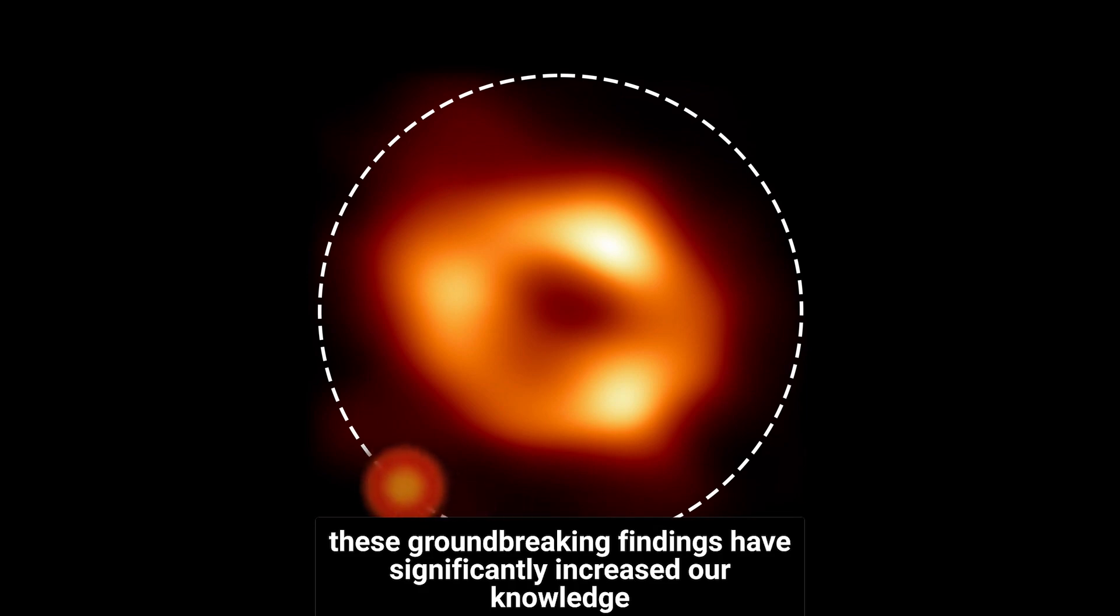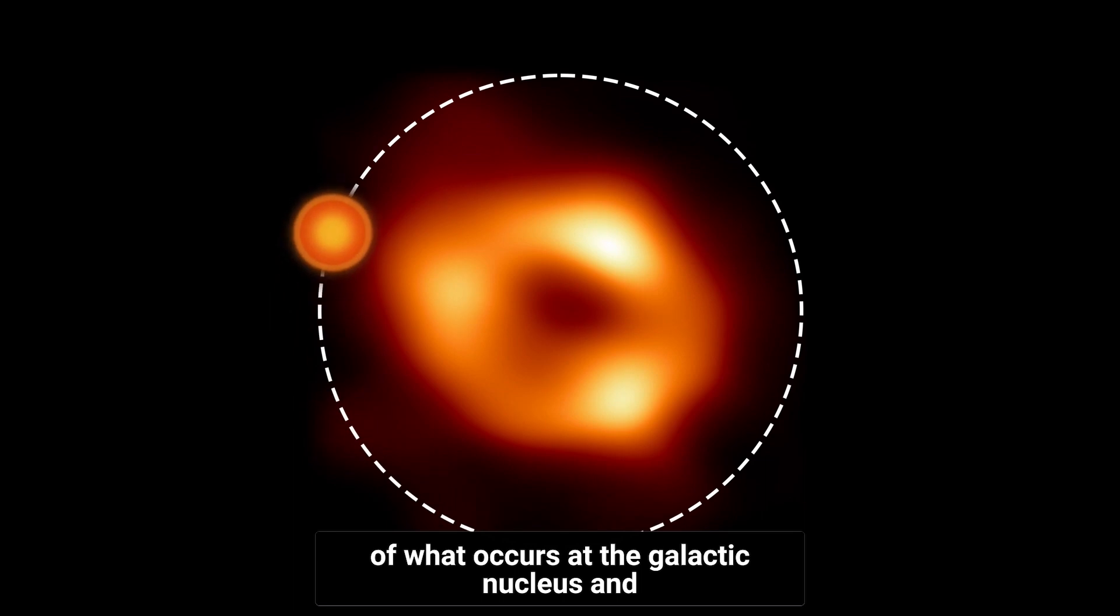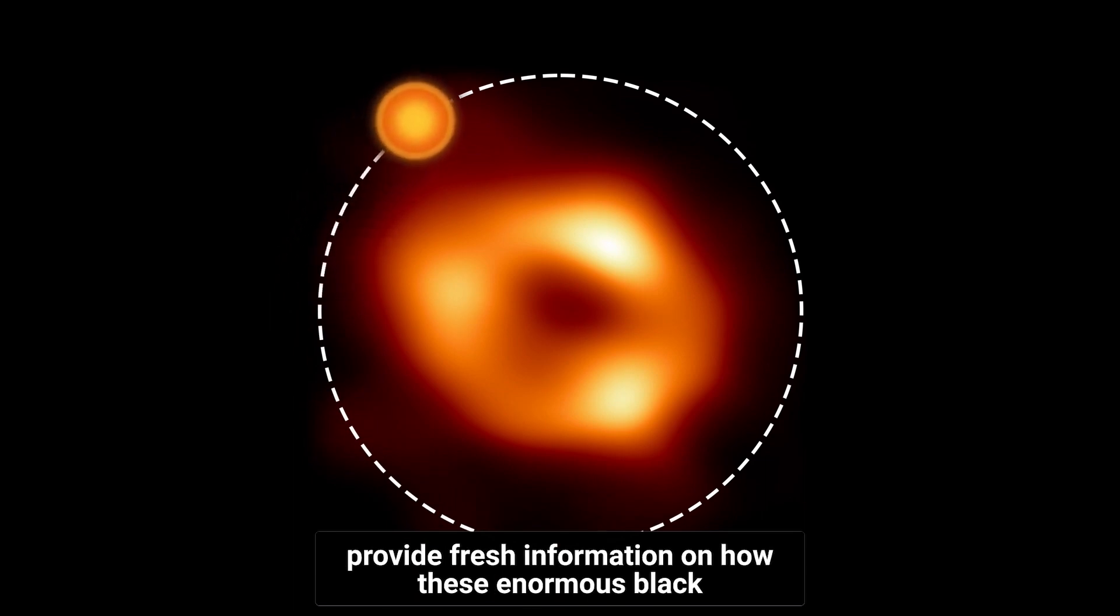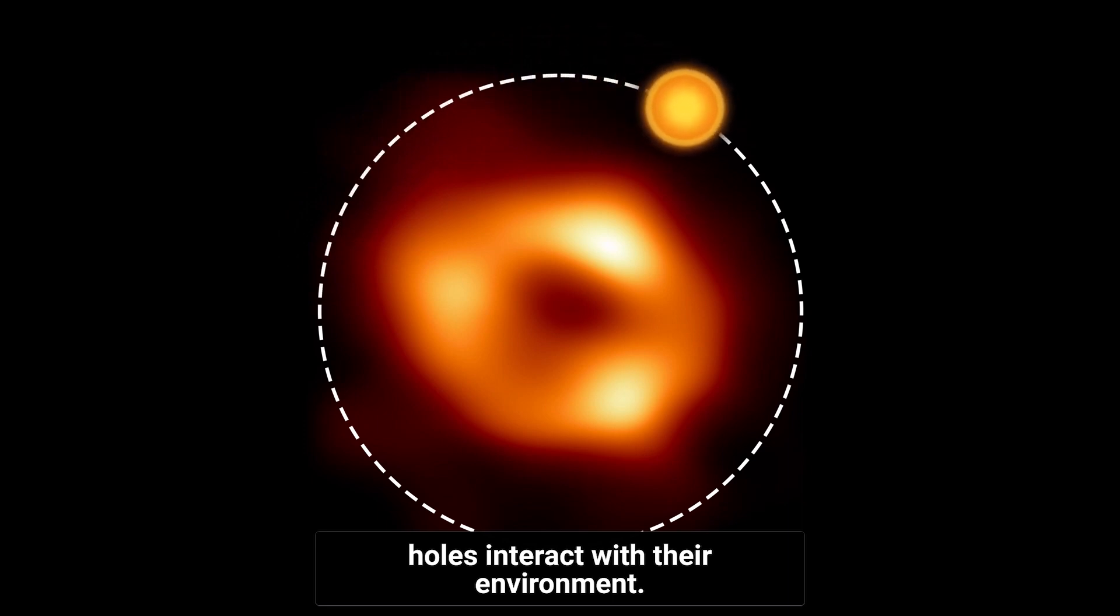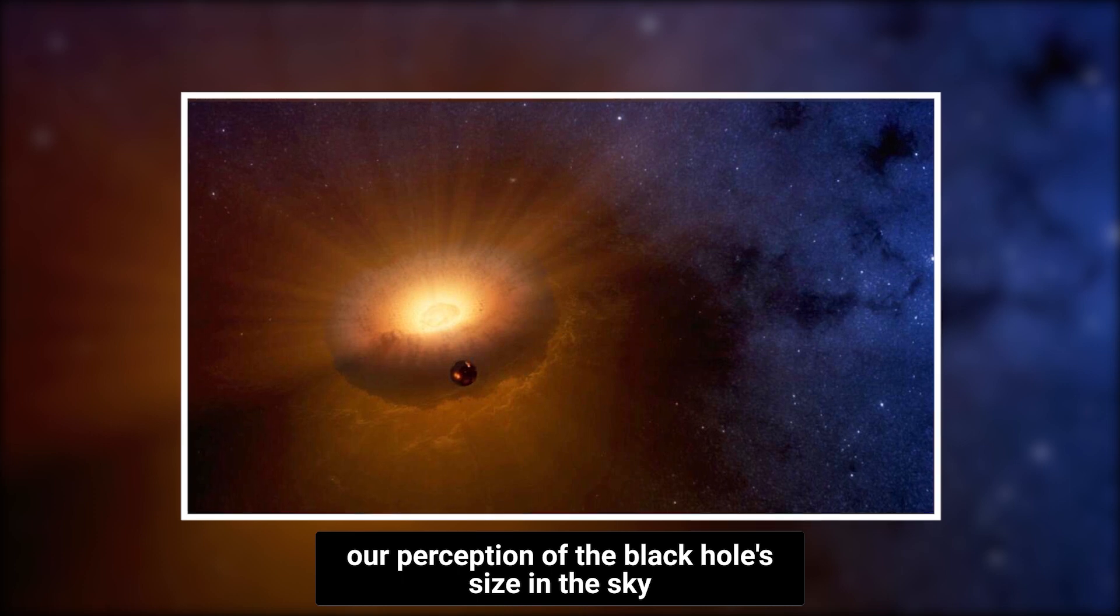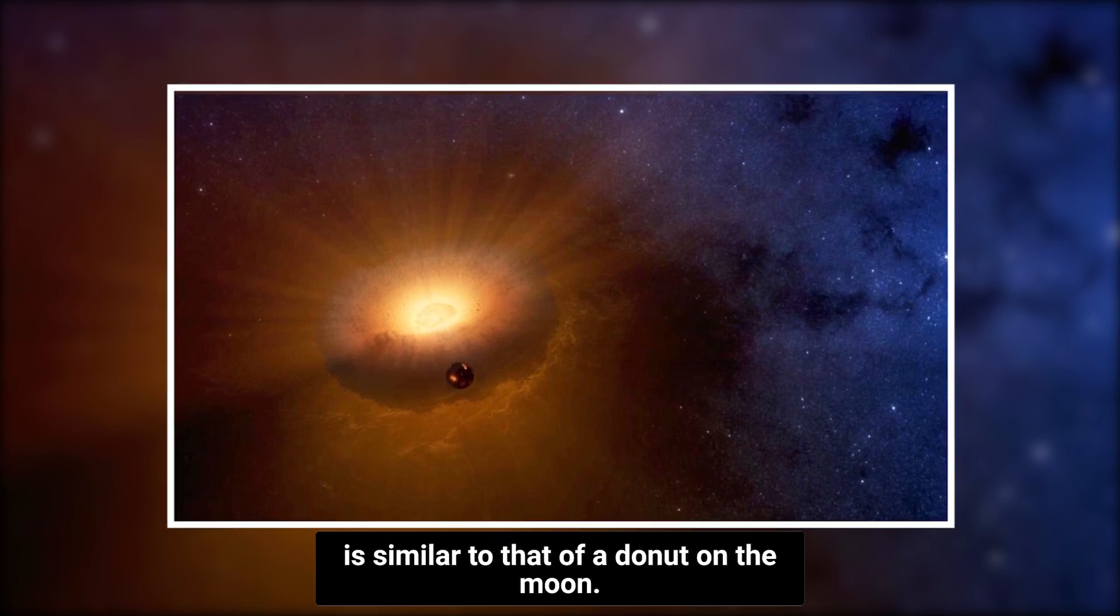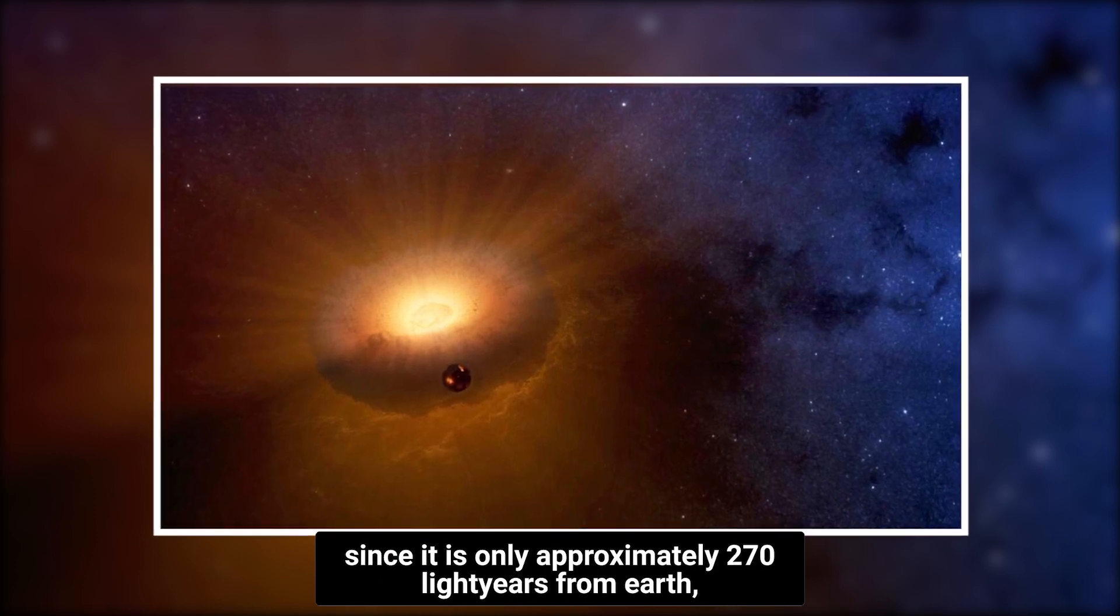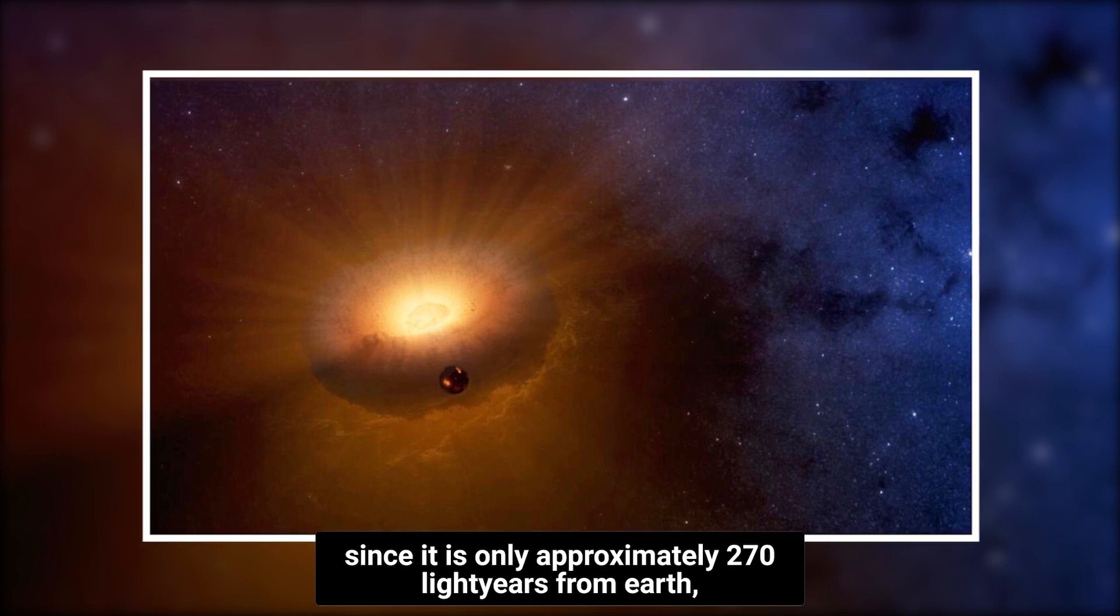These groundbreaking findings have significantly increased our knowledge of what occurs at the galactic nucleus and provide fresh information on how these enormous black holes interact with their environment. Our perception of the black hole's size in the sky is similar to that of a donut on the Moon, since it is only approximately 27,000 light-years from Earth.